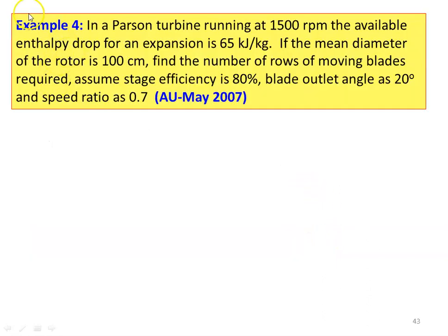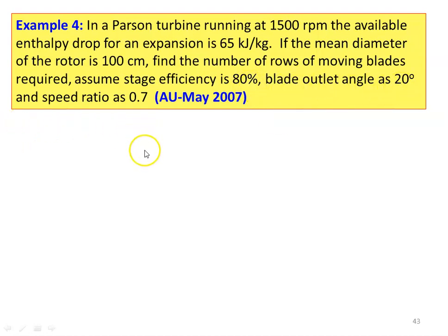Problem 4: In a Parsons turbine running at 1500 rpm, the available enthalpy drop for an expansion is 65 kJ/kg. Mean diameter of rotor is 100 cm. Find the number of rows of moving blades required, assuming stage efficiency 80%, blade outlet angle 20°, and speed ratio 0.7.